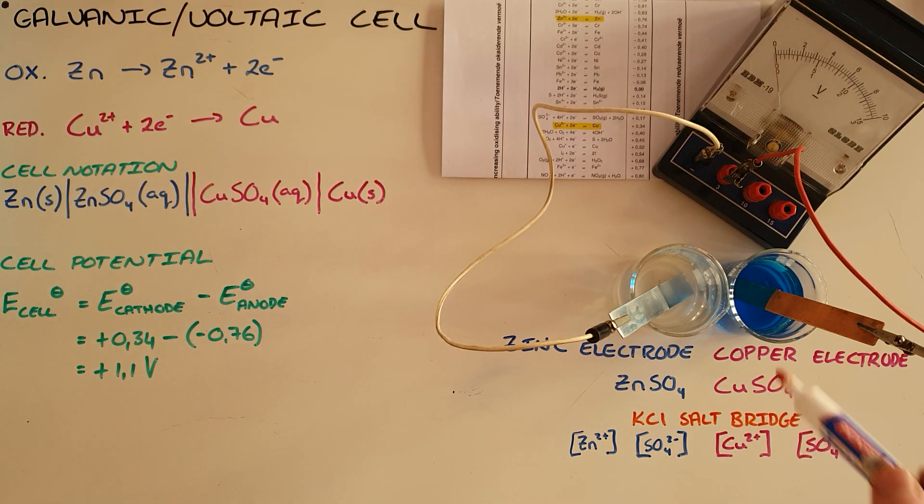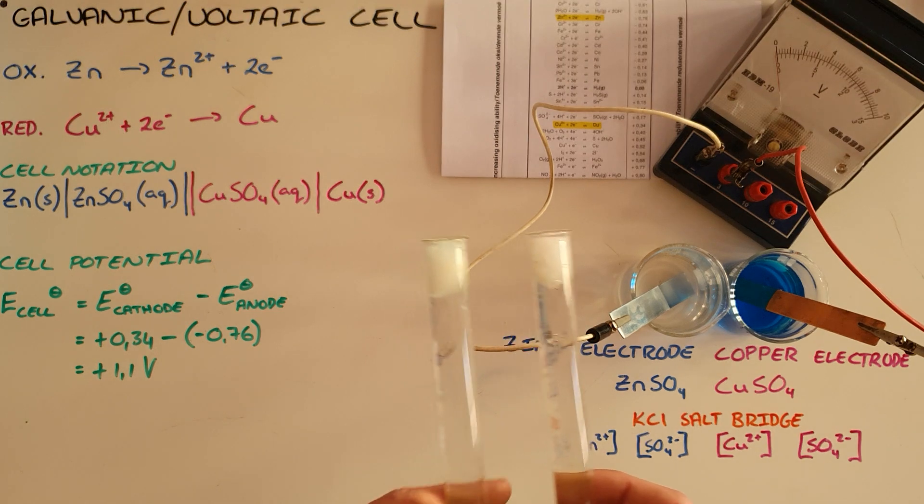And so what we can see here is once that is set up, I have connected this to a voltmeter to detect the potential difference. All that remains to do is to complete the circuit and that is by using a potassium chloride salt bridge that has been prepared in this U-tube here.